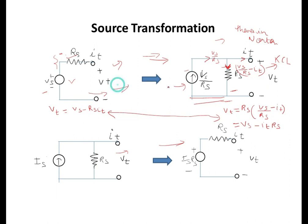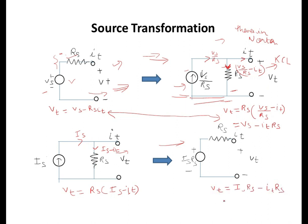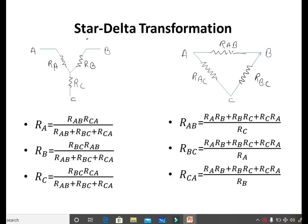Similarly, V_T = R_S·I_S − I_T·R_S, because I_S flows through R_S and the total current in R_S is I_S − I_T. So both values are equal and the connections can be interchanged. You will understand this fully in Thevenin and Norton theorem lectures, but for now you can either remember the formula or use this small derivation.